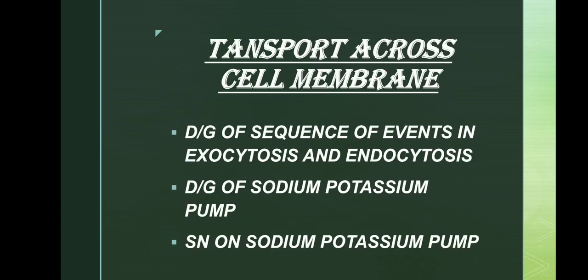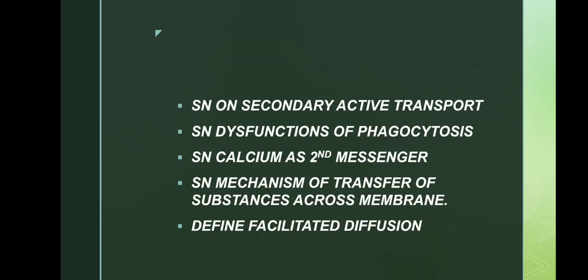Moving on to the next chapter — transport across cell membrane. From this chapter, diagram of sequence of events involved in exocytosis as well as endocytosis is asked. Diagram of sodium-potassium pump and short note on sodium-potassium pump are generally asked. Short note on secondary active transport, dysfunctions of phagocytosis, calcium as second messenger, mechanism of transfer of substances across membrane, and facilitated diffusion can also be asked.